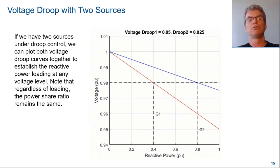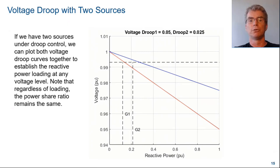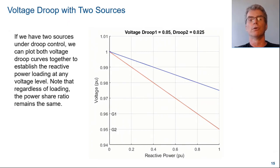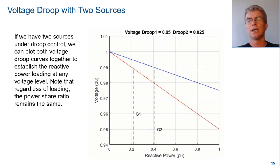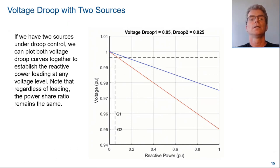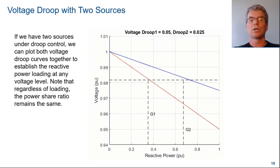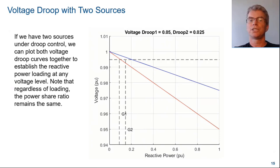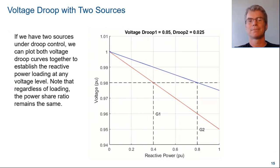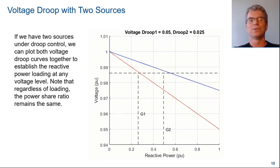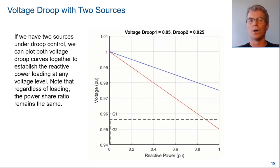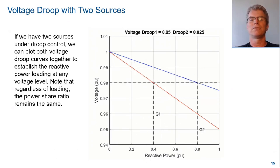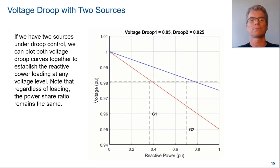Similarly to frequency droop, if we have two sources that are under voltage droop control, we can plot both voltage droop curves together to establish the reactive power loading at any voltage level. Note that regardless of loading, the power share ratio remains the same. In the animation shown here, generator 2 has half the droop value of generator 1, and so generator 2 provides twice the reactive power.